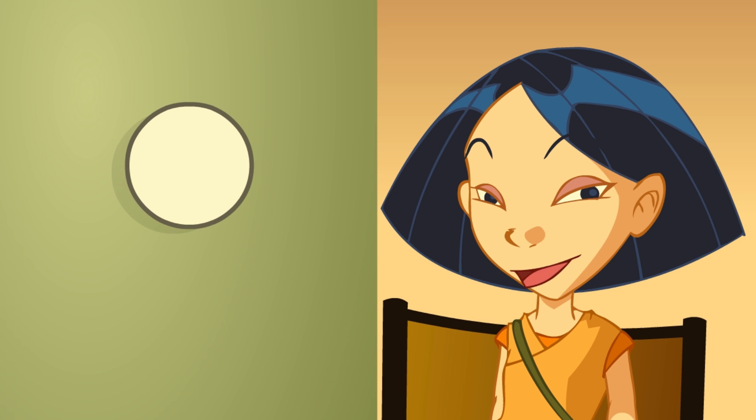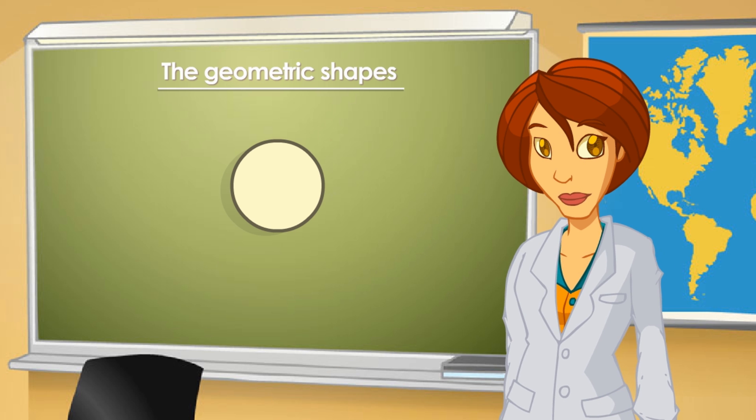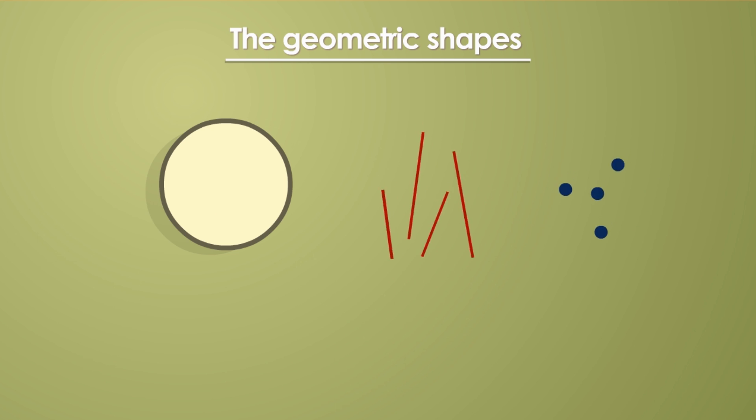There's only the circle left. Well, circles are different from the rest of the shapes. They haven't got sides or vertices. They've got an edge and an inside area.